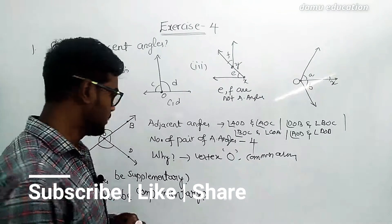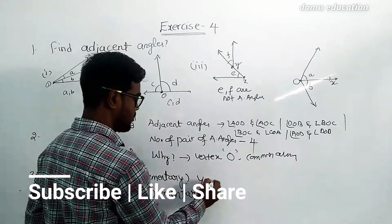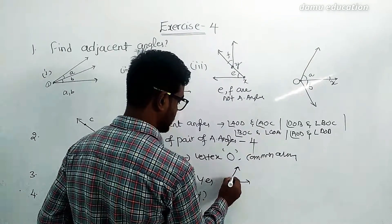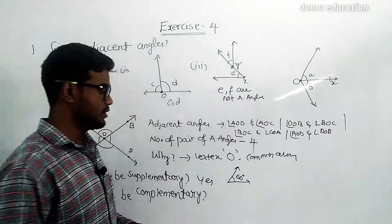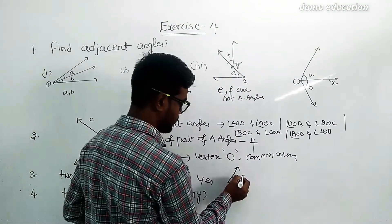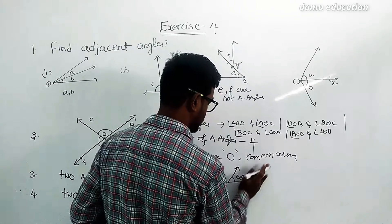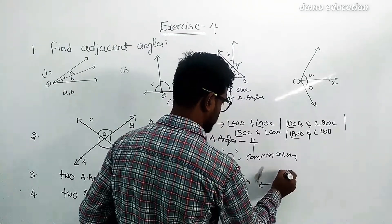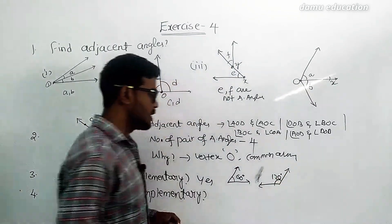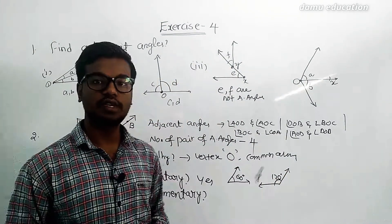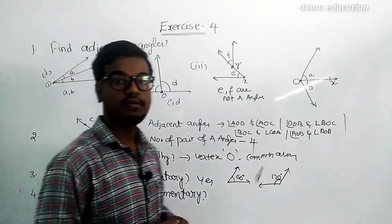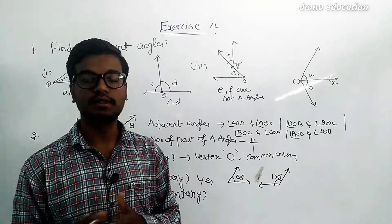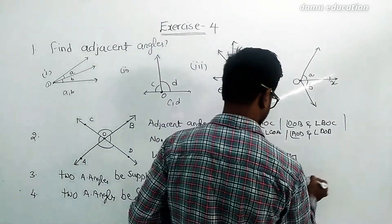Next, can two adjacent angles become supplementary? Yes — two adjacent angles can form supplementary angles. For example, take 60 degrees and 120 degrees. The sum of two angles equal to 180 degrees makes them supplementary. Joining 60 degrees and 120 degrees frames a supplementary angle.